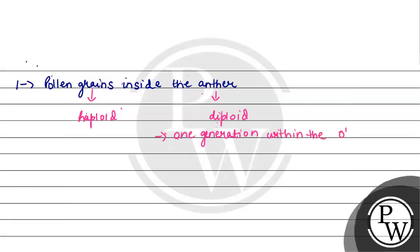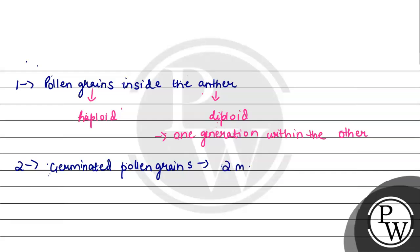Option two: germinated pollen grains with two male gametes. The pollen grains are in a haploid condition and the male gametes are also haploid. Therefore, two generations are present here, one within the other.